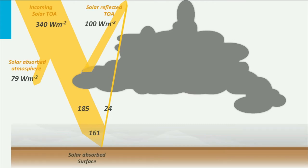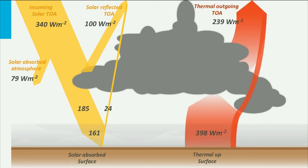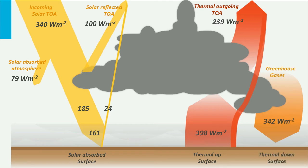This diagram shows the energy flowing in and out of the earth system. The numbers are given in watts per square meter. The intensity of solar radiation at the top of the atmosphere is approximately 340 watts per square meter. Part of this radiation is reflected into space again by clouds, aerosol and by the surface of the earth. Solar radiation is also partly absorbed by the atmosphere. The remaining energy enters the surface where it is absorbed and heats the surface of the earth. How does the earth respond to this heating?